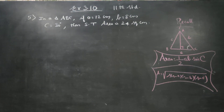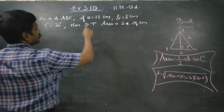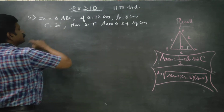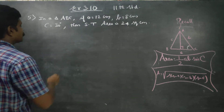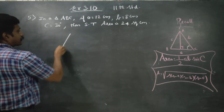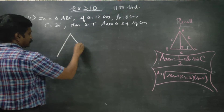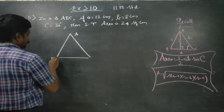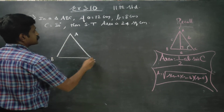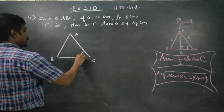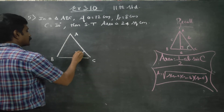Hello 11th grade students. In triangle ABC, A is given, B is given, and the included angle is 30 degrees. This is my A, this is my B, and this is my C. The C angle is 30 degrees.